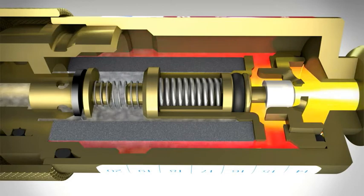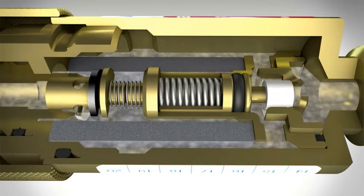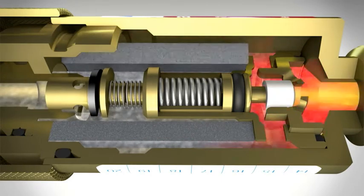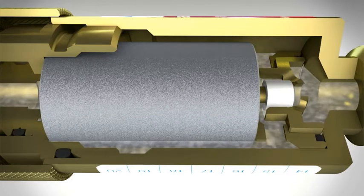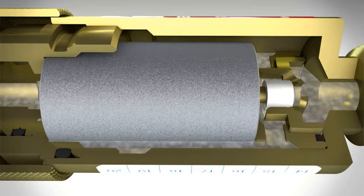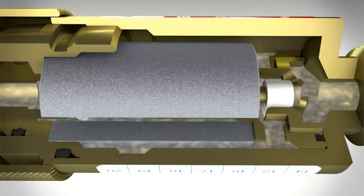If, on the other hand, a flashback occurs, this will be stopped immediately by the key element of the flashback arrestor, the hollow cylinder made from sintered chrome nickel steel. Only with this technology can flames from the flashback be prevented.